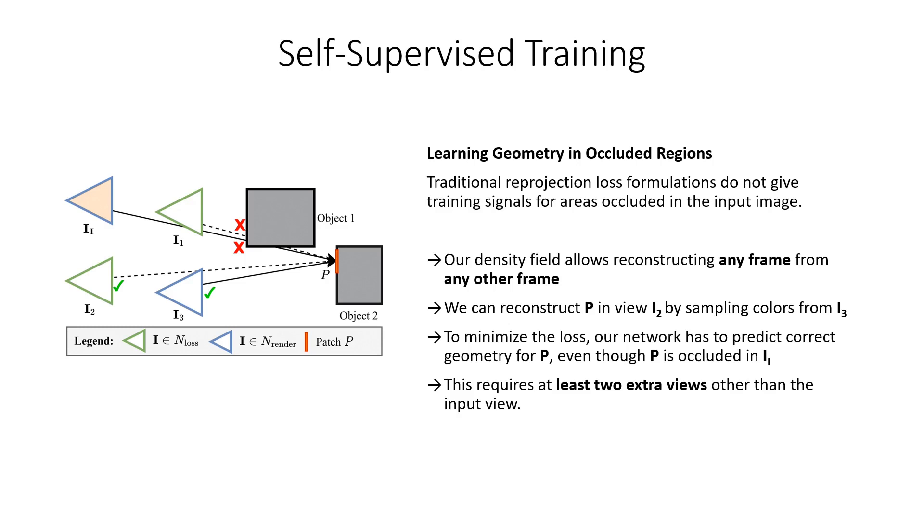Consider an area P of the scene, which is occluded in the input image, but visible in two other frames, image 2 and image 3, as depicted in the figure. During training, we aim to reconstruct this area in image 2. The reconstruction based on colors sampled from image 3 will give a clear training signal to correctly predict the geometric structure of this area, even though it is occluded in the input image.